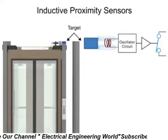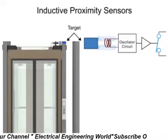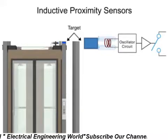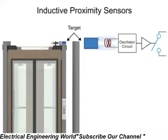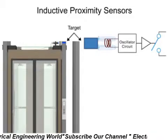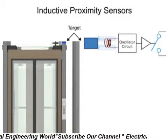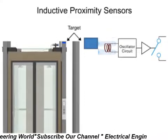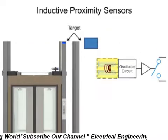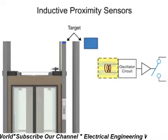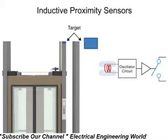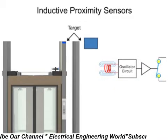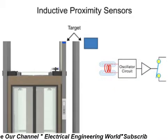This change in amplitude sends a signal to the switch, changing it to its normally open or normally closed configuration, respectively. When the metal target is removed from the sensor's range, the oscillator will return to its normal amplitude and the switch will return to its normally open or closed output.